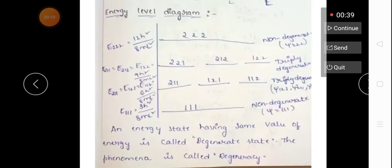In this energy level diagram, the energy states having the same value of energy are called degenerate states. This phenomenon is called degeneracy. The energy states have the same energy values — that is what we mean by degeneracy states.